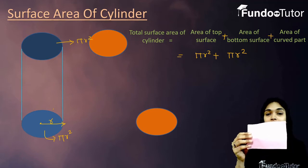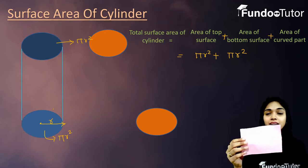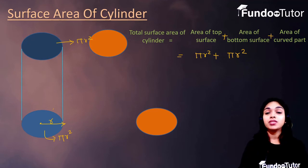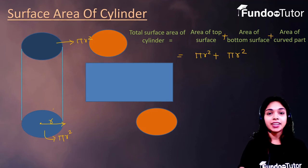So, how is it look like? Is it a rectangle? Yes, it's a rectangle. So, curve part of cylinder is nothing but it's a rectangle.